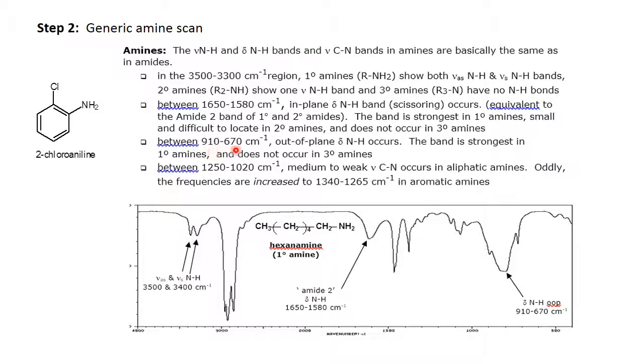Between 910 and 670, primary and secondary amines will have an NH out-of-plane bend. It's a very broad, usually not a very intense band in this region, kind of reminiscent of an OH bend in this region. And of course this would not occur in tertiary amines because there are no hydrogens to bend on nitrogen.